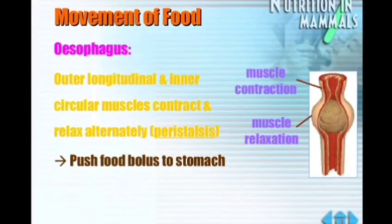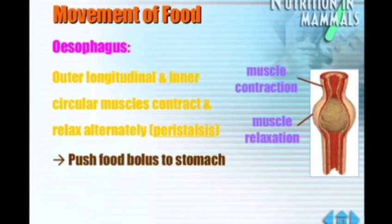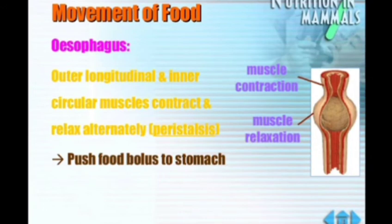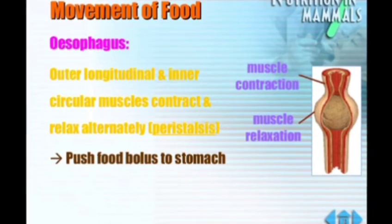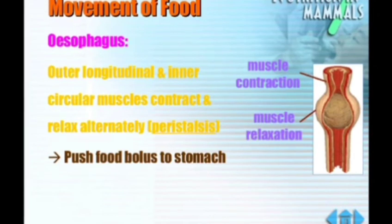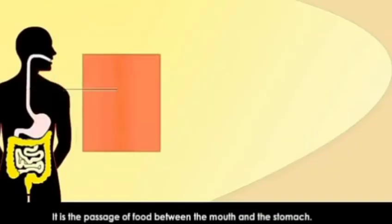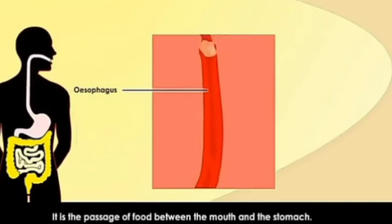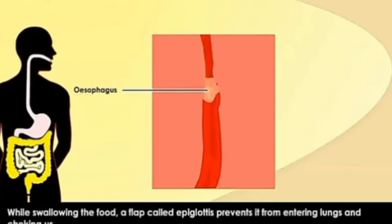The food slides down into the esophagus or the food pipe, which is about 25 cm long. The food slides down the esophagus in a wave-like motion caused by contraction and relaxation of the muscles, and that is called peristaltic movement. Peristalsis is the repeated contraction and expansion of the wall of the esophagus. There is a regular contraction and expansion of the food pipe — this is the peristaltic motion.